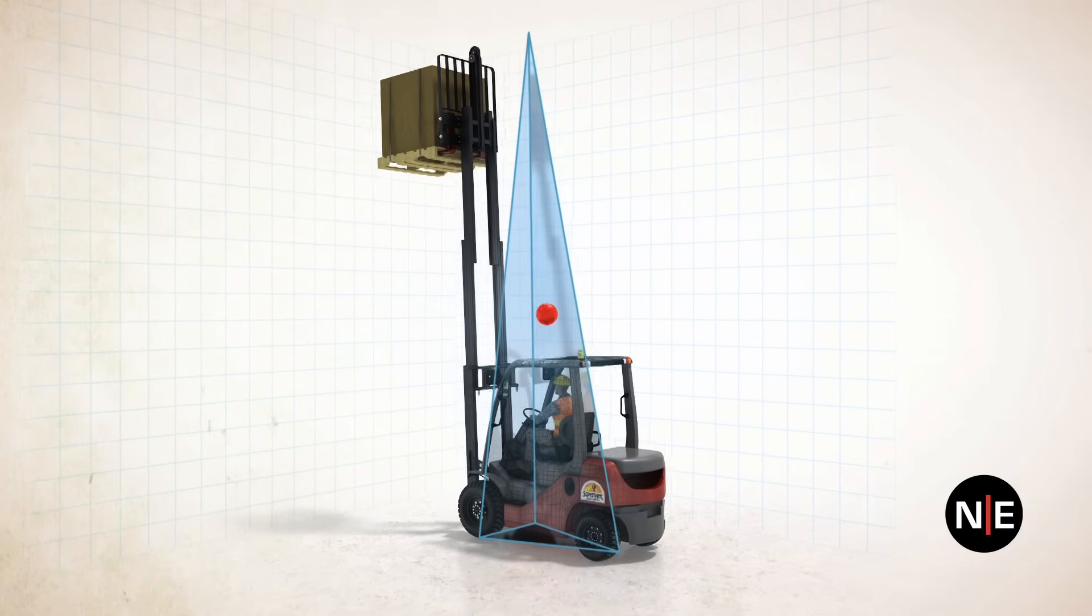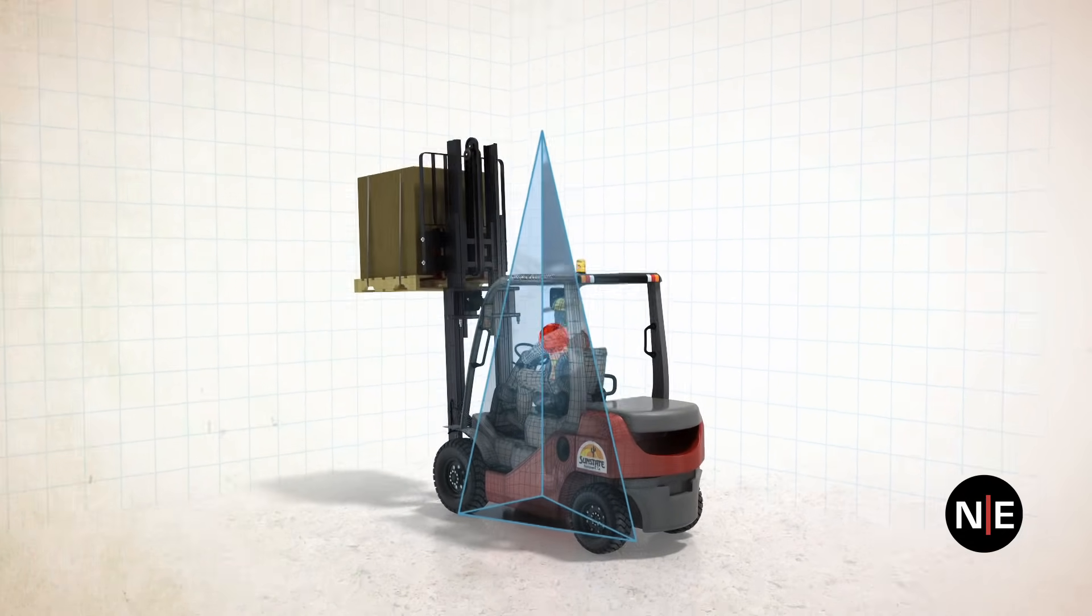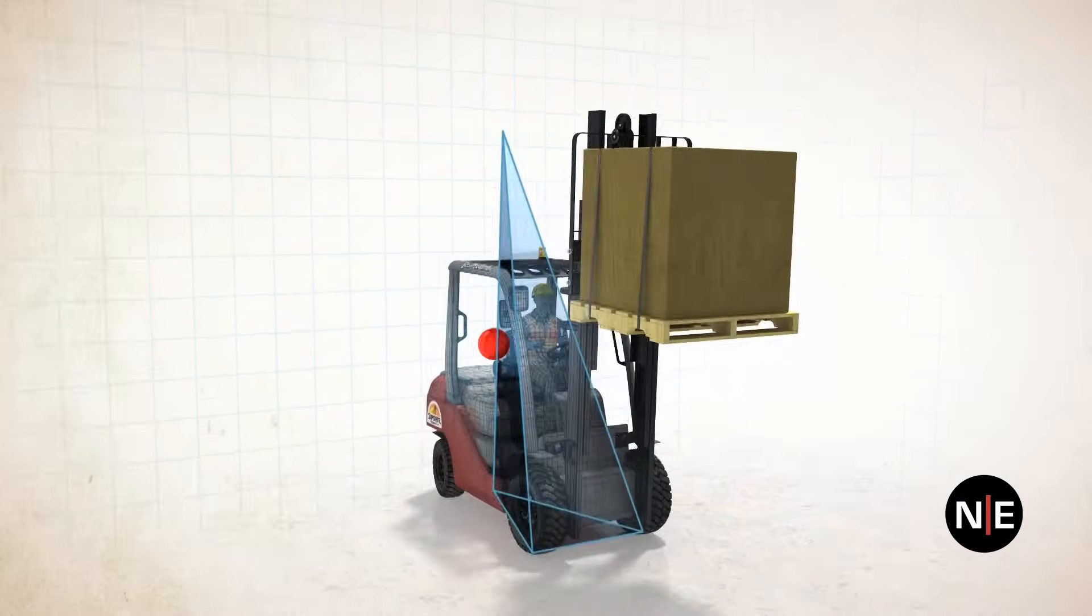The center of gravity rises as the load rises, and now needs to shift only a short distance to get outside the narrowing top of the pyramid, which would cause a tip over, especially if the machine is moving.